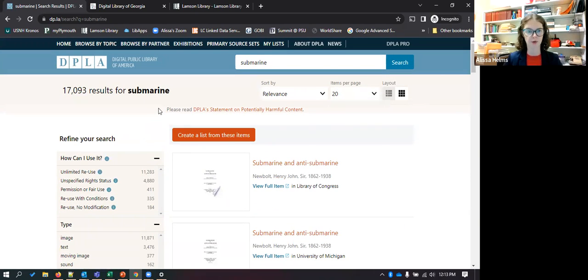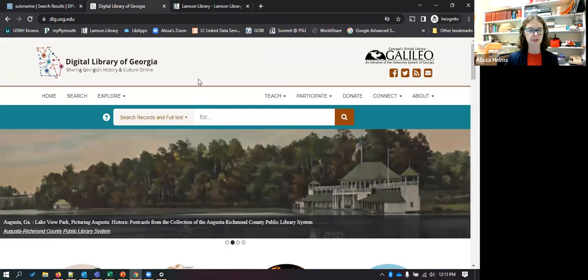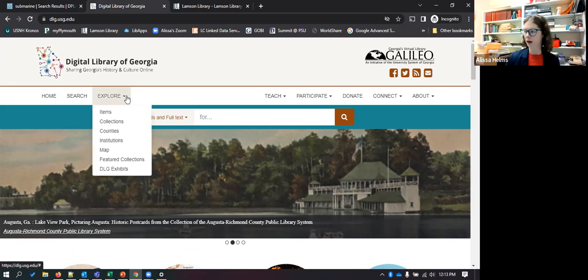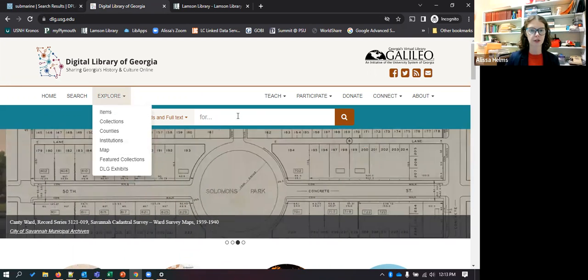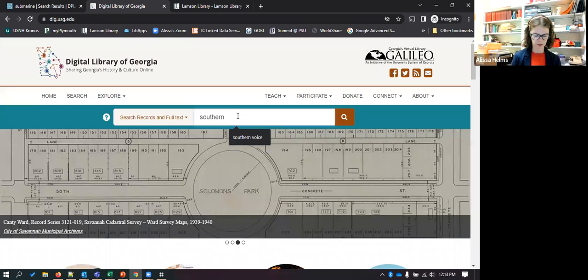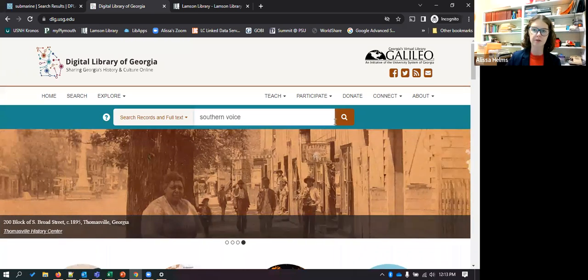So let's go to a different one here. So this is one at the state level, this is the Digital Library of Georgia. And this one connects lots of different institutions that have digital collections from across the state of Georgia. For this one you can browse as well, so you can browse by collection or institution.